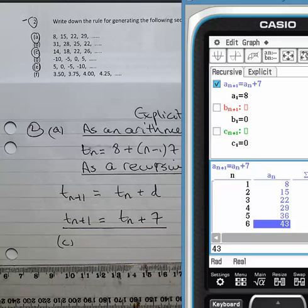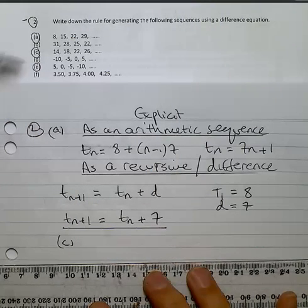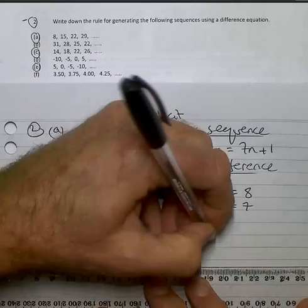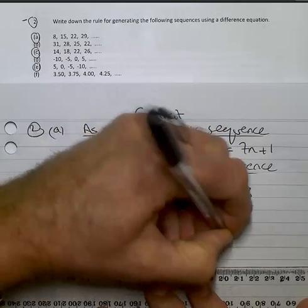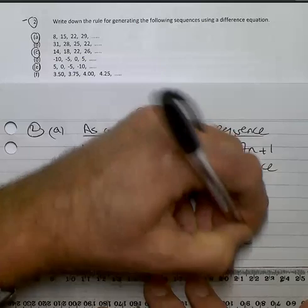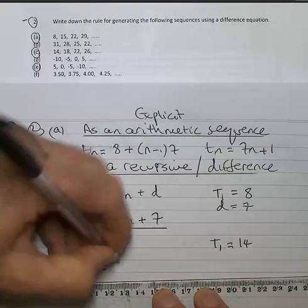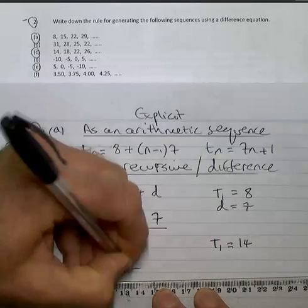Now, looking at C, you should be able to see the common difference here is equal to 4. Our starting term or T1 is equal to 14. So Tn+1 is equal to Tn + 4.